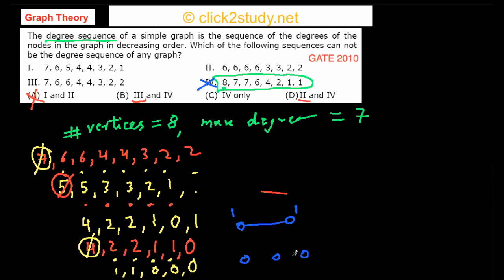This final sequence is easy to analyze. Two vertices of degree 1 can simply be connected to each other, giving each a degree of 1 — that's valid. The three vertices of degree 0 are totally isolated. This is a perfectly valid graph, so option 3 IS a valid degree sequence and can be eliminated as the answer.